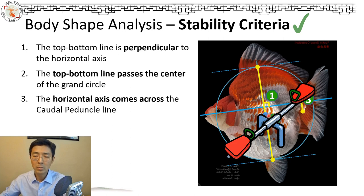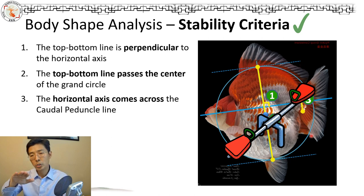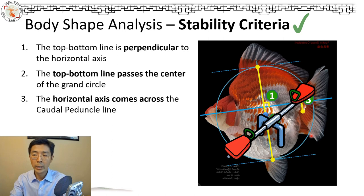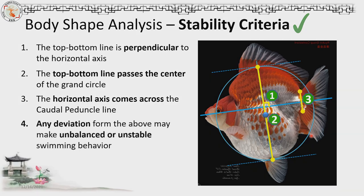Most of the time, the swim bladder is actually distributed somewhere around this circle line. So think about it — if your tail tilts up or if the tail tilts down, that's going to shift the seesaw and make your fish swim with instability. Again, this is only from the physical perspective of your body weight distribution. So any deviation of those three criteria is going to trigger unbalanced or unstable swimming behavior.